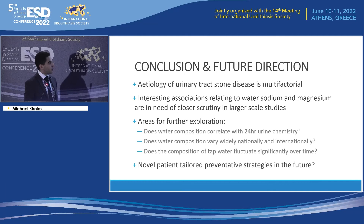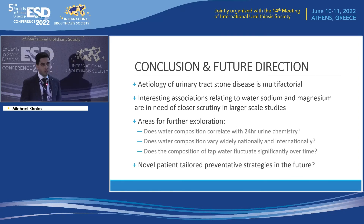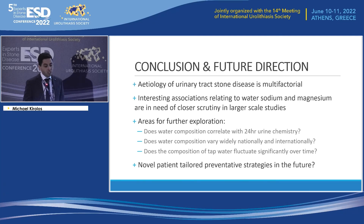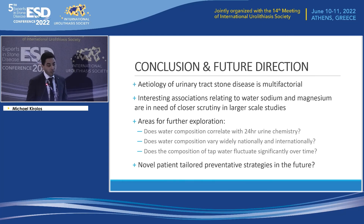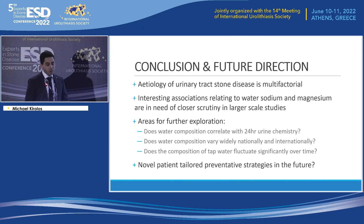To summarize, the etiology of urinary tract stone disease is multifactorial. The interesting results relating to water sodium and magnesium are in need of closer scrutiny and larger-scale studies over wider geographical areas. This study has identified a number of important areas and questions for further exploration — for example, does water composition correlate with 24-hour urine chemistries? Does it vary widely nationally or internationally? And does tap water composition fluctuate significantly over time? Studying the relationship between water composition and urinary tract calculi could lead to a better understanding of the etiology of certain calculi types, and in the long run, could lead to novel preventative strategies tailored to patients on a case-by-case basis. Thank you very much.